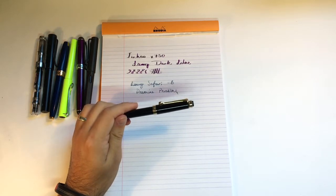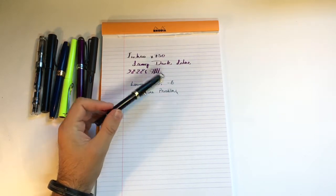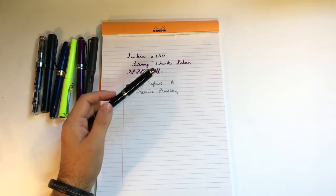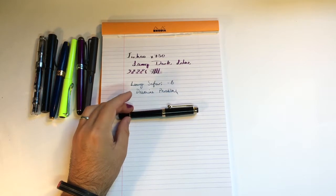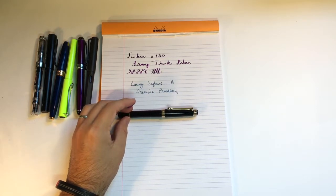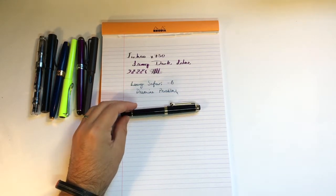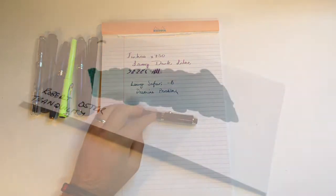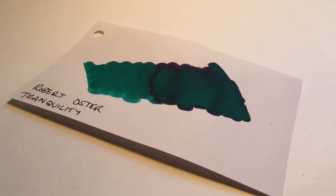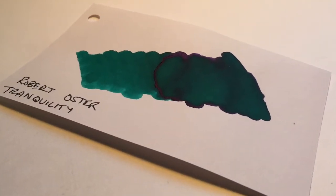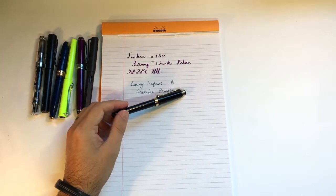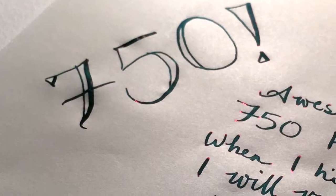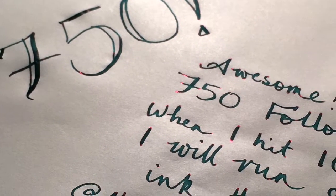So an interesting little pen with an interesting little flex nib. It goes from a fine through to I suppose a double broad perhaps a little bit more. I had this inked with Robert Oster Tranquility through the week and it was just beautiful. I'm not sure if I've got a writing sample that I can show you but if I do have something I'll put it up in the review.